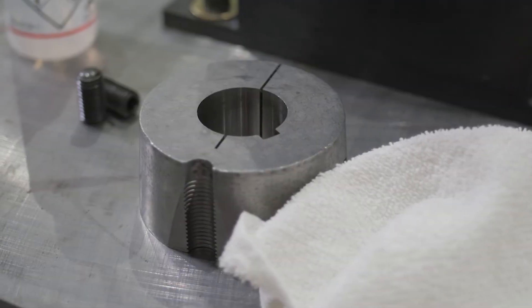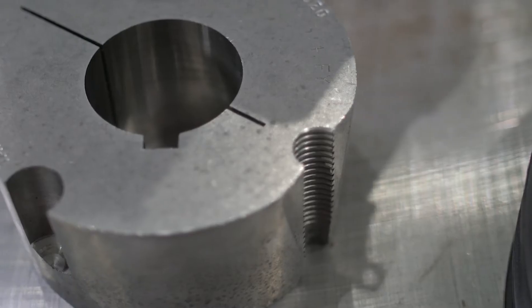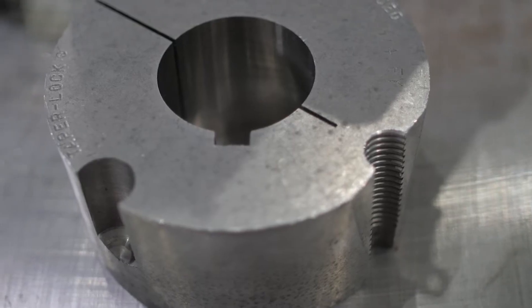Taper lock bushings are an economical, compact, and torque-dense shaft attachment method used in V-belt sheaves, synchronous and roller chain sprockets, and couplings.